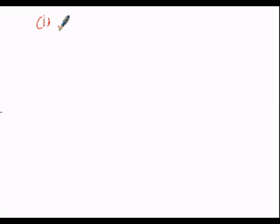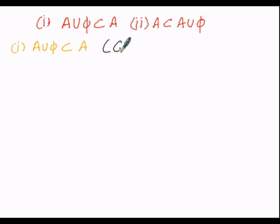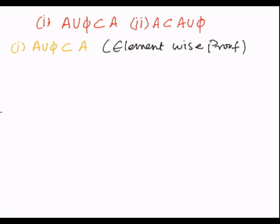The two conditions are: first, A union φ must be a subset of A, and second, A must be a subset of A union φ. Considering the first case, we want to prove A union φ is a subset of A using element-wise proof. We consider one element X which belongs to A union φ.